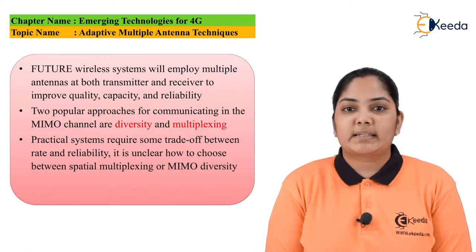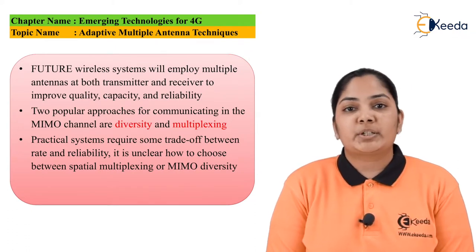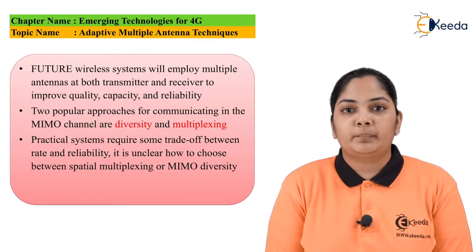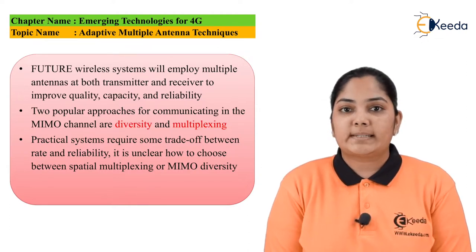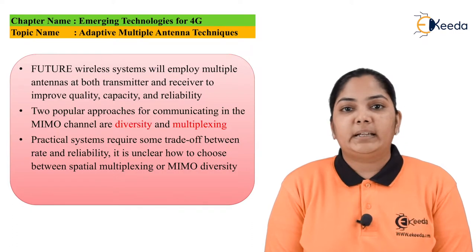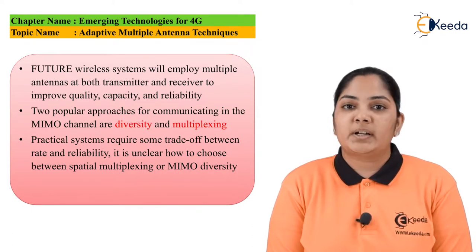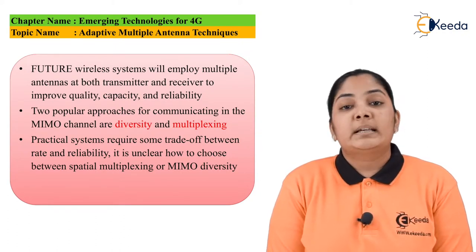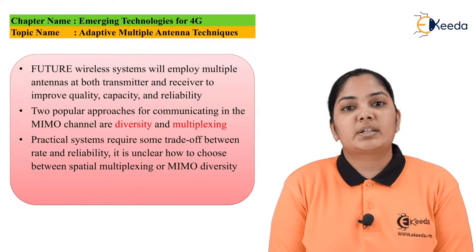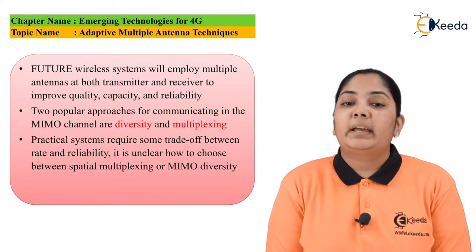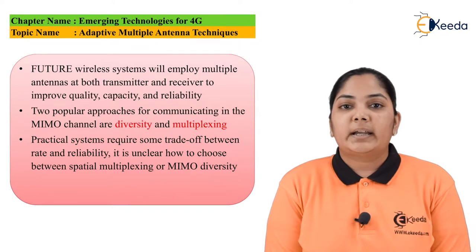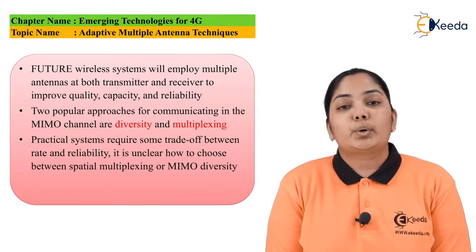Spatial multiplexing means the data bit stream that is coming is divided into equal sets and all the different data sets are transmitted on different channels. This spatial multiplexing ensures a higher data rate is achieved. Since one single transmission achieves a data rate of X, if we are using 8 different channels for transmission, the data rate will increase to 8 times.